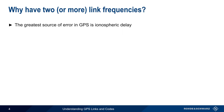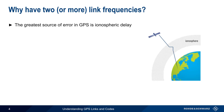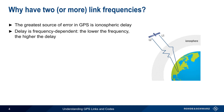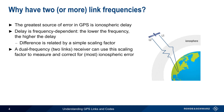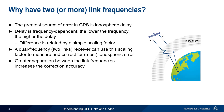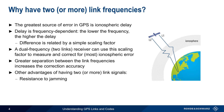The reason for multiple linked frequencies is ionospheric delay, which is the greatest source of error in GPS. Signals from GPS satellites are delayed as they travel through the ionosphere, and this delay varies with both time and location. This delay is also frequency-dependent — the lower the frequency, the higher the delay. The difference is, however, related by a simple scaling factor. What this means is that a dual frequency receiver — one that measures signals from two links — can use this scale factor to remove and correct for most ionospheric delay. The greater the separation between the link frequencies, the better the correction accuracy. There are also other advantages to having multiple links, such as resistance to jamming and redundancy.